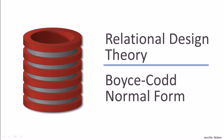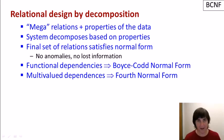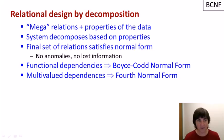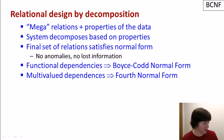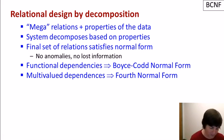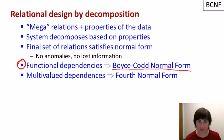Now that we've learned about functional dependencies, let's talk about how they're used to create relations that are in Boyce-Codd normal form. Very quick reminder about relational design by decomposition: the database designer creates mega relations containing all the information to be captured, the system decomposes them into smaller ones satisfying a normal form. Functional dependencies are used for Boyce-Codd normal form, and multi-valued dependencies for fourth normal form.